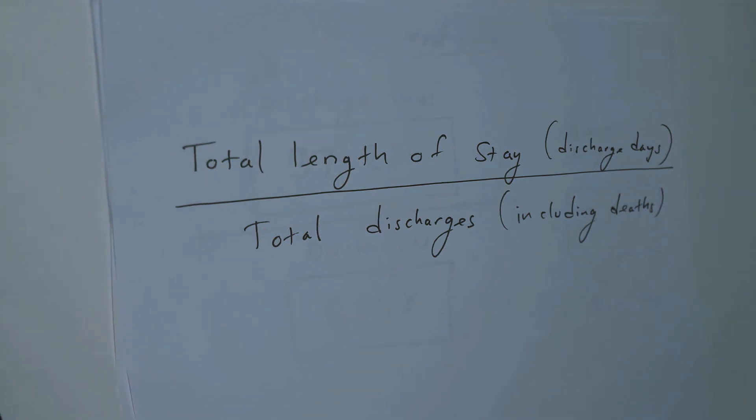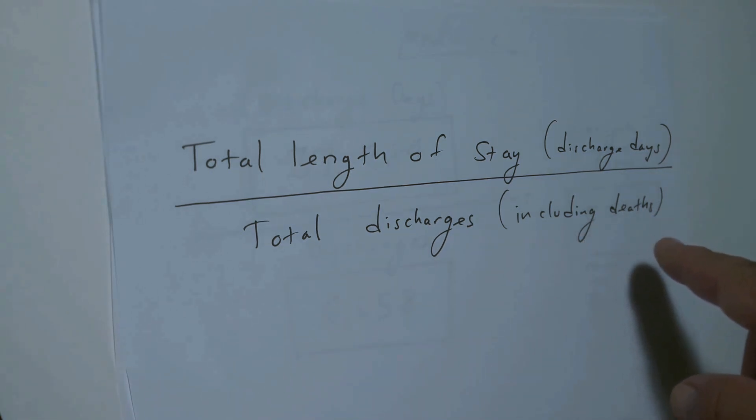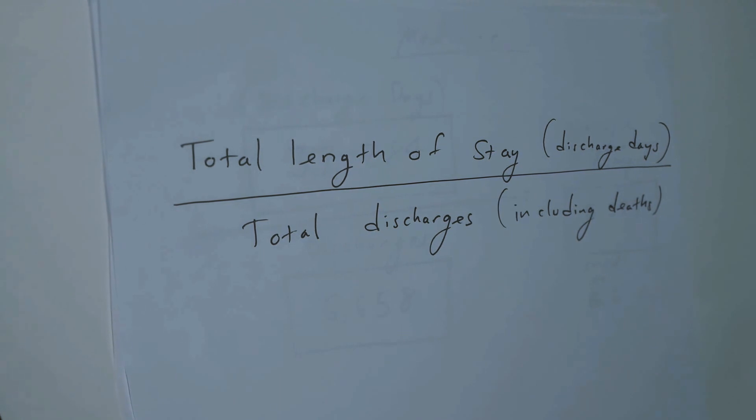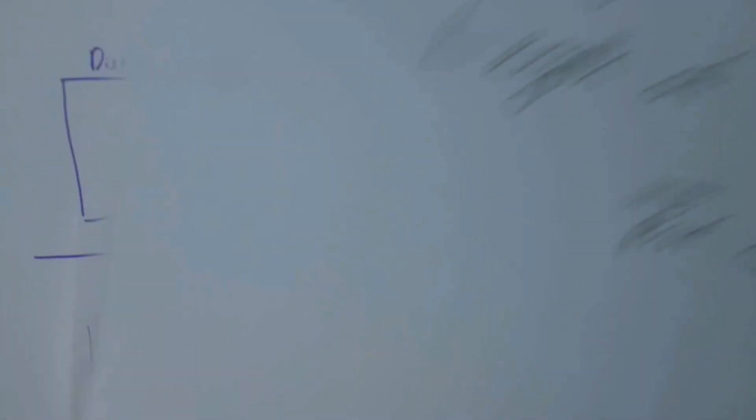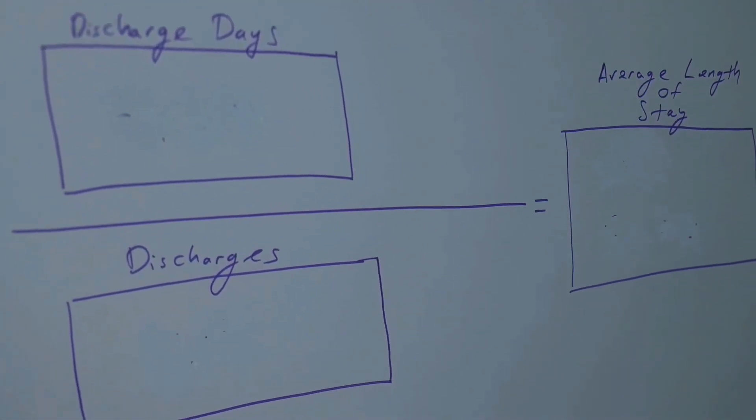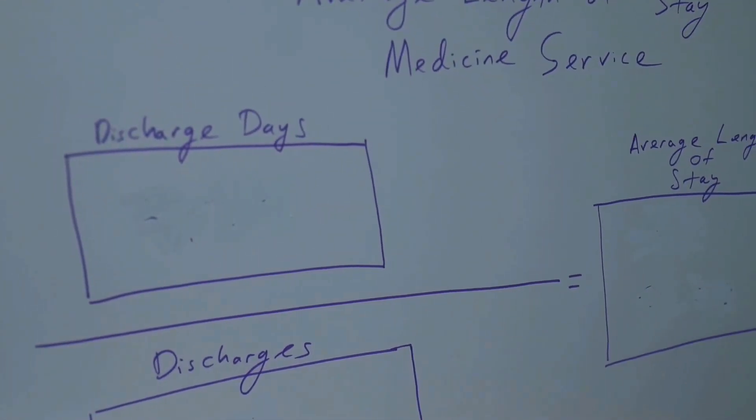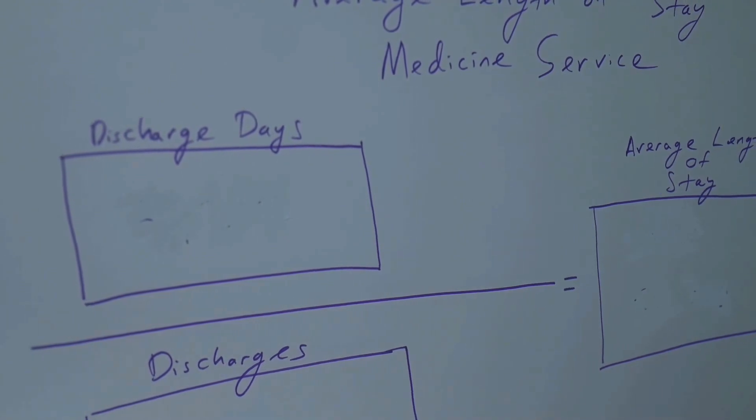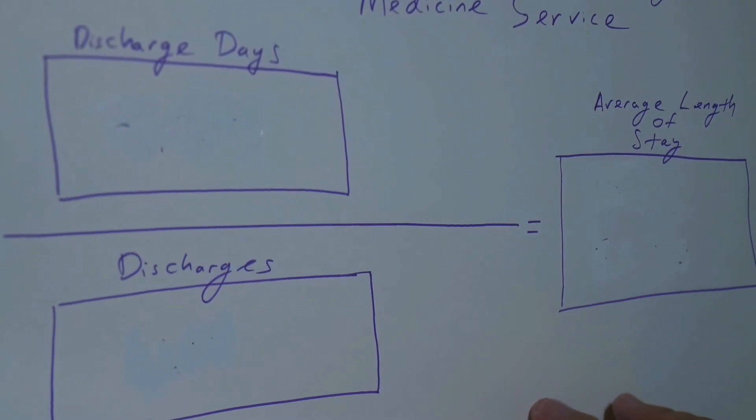The total length of stay, which is otherwise known as discharge days, over the total discharges. Those will include deaths, so when you're calculating it make sure you include deaths. I've utilized the same formula we just discussed, but I like to use boxes. I've got the boxes listed there, and it makes it easier for you to do without making a mistake.